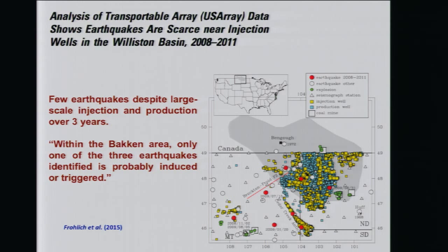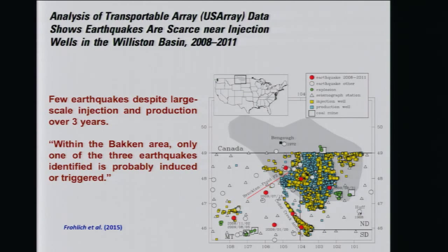Interestingly, there are places like North Dakota where there has been tremendous injection and very few, if any, earthquakes. North Dakota is now one of the major oil producers in the lower 48, yet Froelich and others searching for induced earthquakes found only three possibilities over a multi-year period — and probably only one of the three is induced or triggered. The fluids just aren't getting into the basement. That's significant and important.